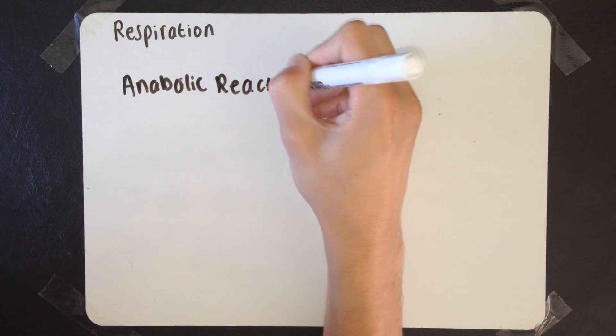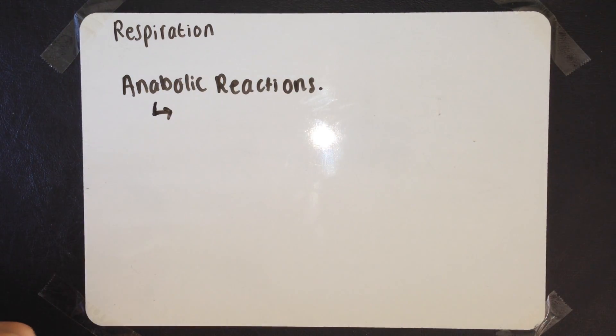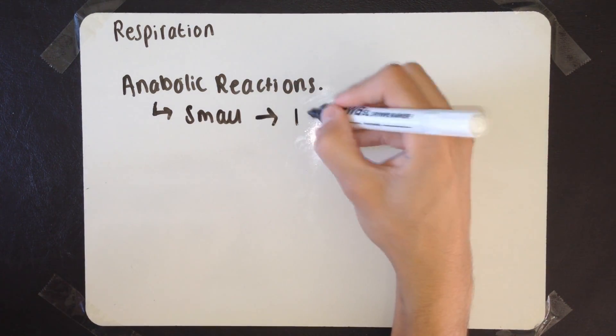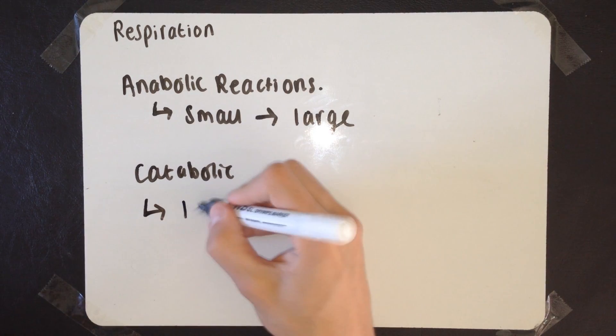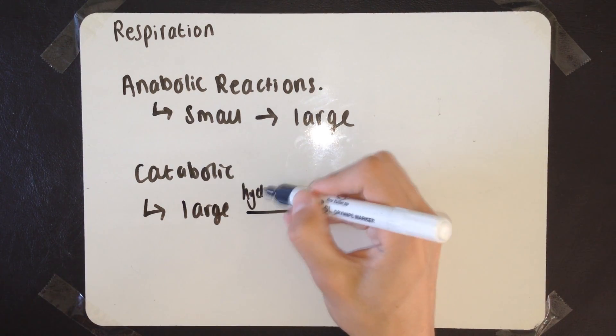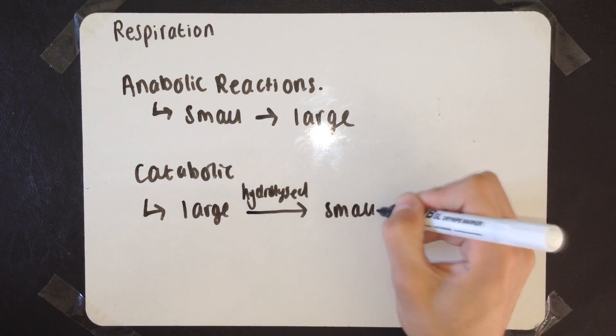Just some definitions here. Anabolic reactions are reactions in which smaller molecules all come together to form a large molecule. Catabolic reactions are reactions in which larger molecules are broken down, or hydrolyzed, into many smaller molecules.